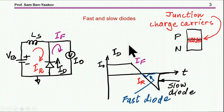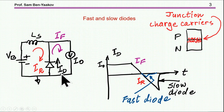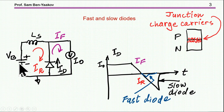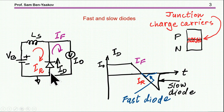What is a fast and slow diode? In fast and slow we are referring primarily to the issue of reverse recovery. Here I'm showing a diode which is forward biased by DC current, and then there is a voltage source which is in reverse such that it is imposing a negative voltage on the diode.